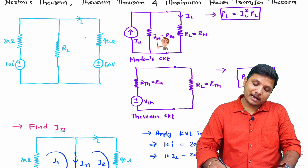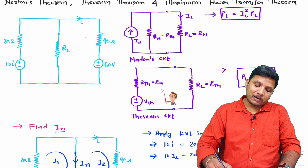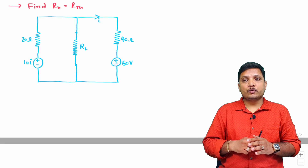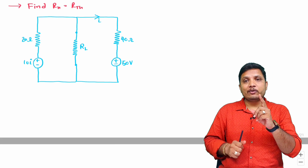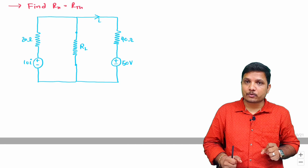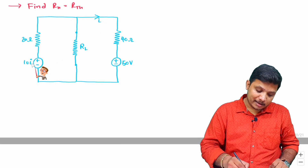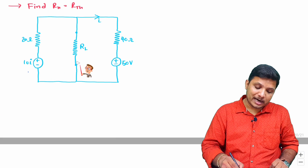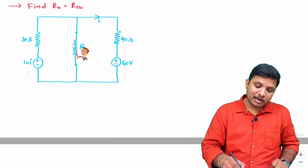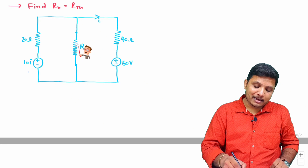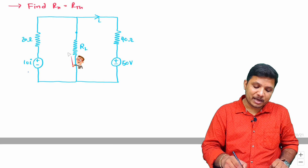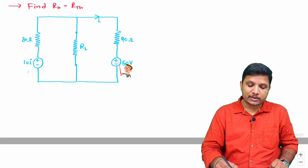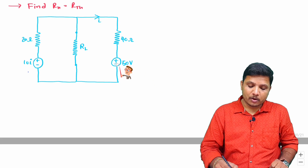Now we find R_n, which is also equal to R_th for this circuit. When solving equivalent resistance, you must consider both dependent and independent sources. This circuit has a dependent source. For the equivalent resistance, independent voltage sources are short-circuited and current sources are open-circuited.